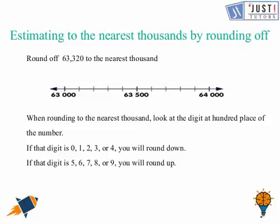Let's see which two multiples of thousands comes just before and after this number. So 63,000 comes before this number and 64,000 comes after this number which are the multiples of 1,000.